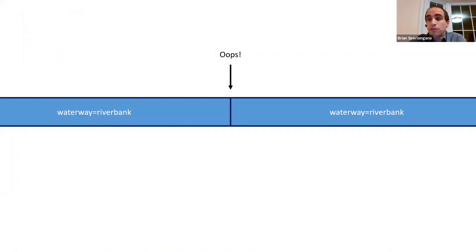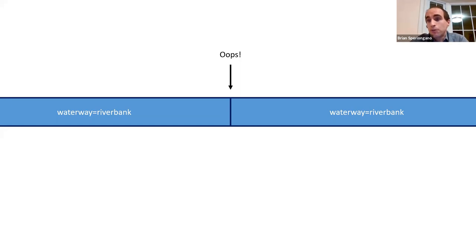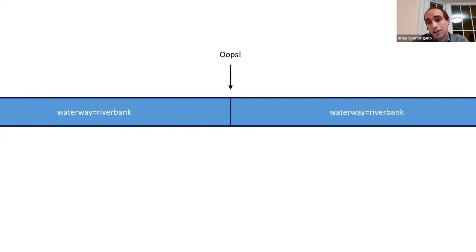This caused a problem for renderers that wanted to render riverbank edges as a border, because at each spot where two sections joined up, an unsophisticated renderer would draw an unwanted border across the river. Without separate riverbank tagging, a renderer would have to pre-process adjacent areas to work around this — which is why today there's no casing on riverbanks in the Carto renderer.